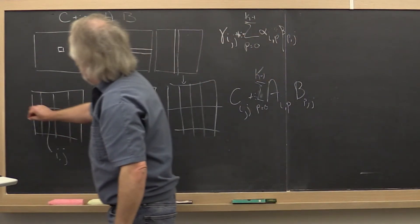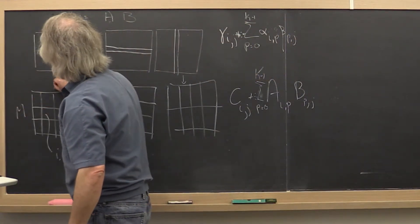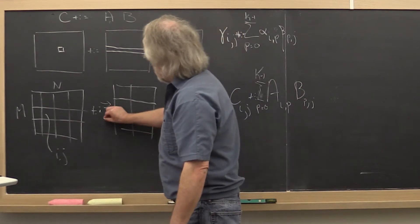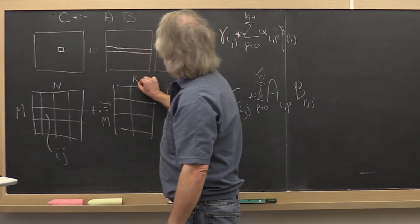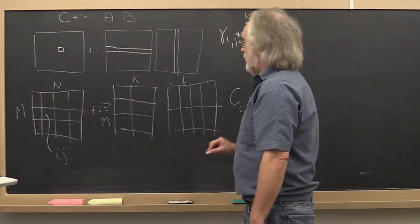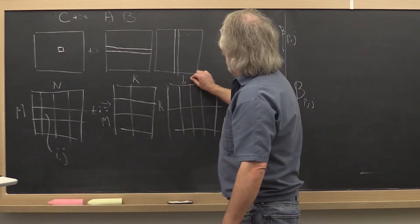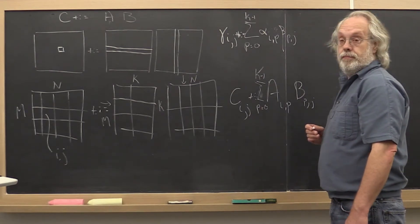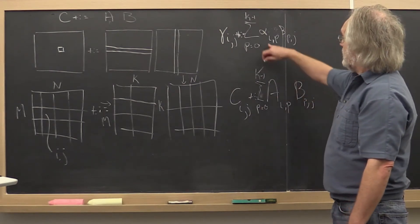So now we have a capital M by capital N partitioning of matrix C, capital M by K of A, capital K by capital N of B. And it works exactly the same way.